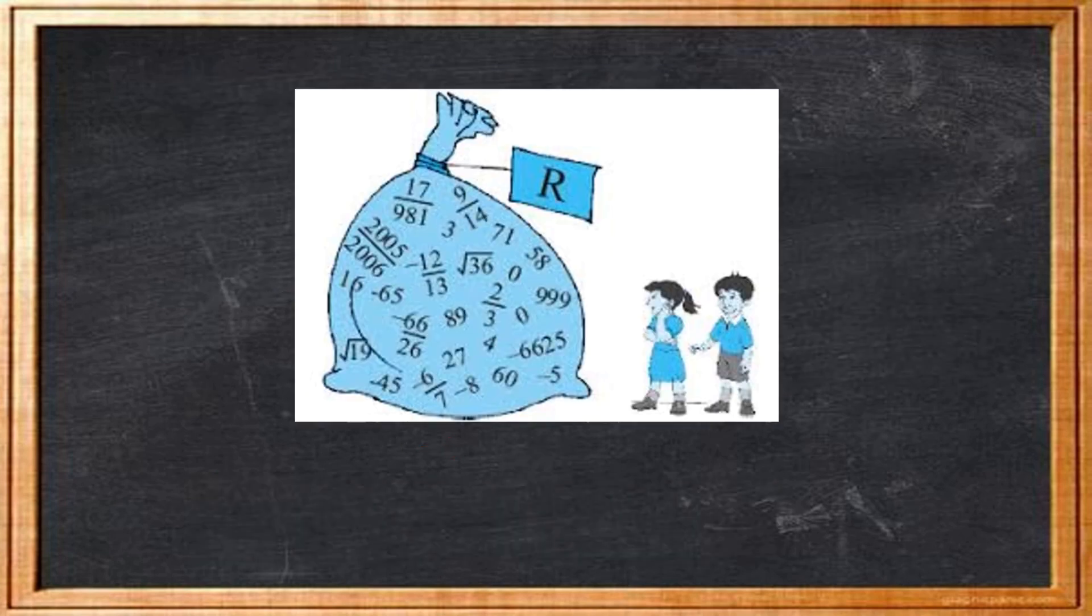Now here in the figure, you can see numbers which are rational, for example minus 6 by 7, 2 by 3, as well as numbers which are irrational, for example root 19.